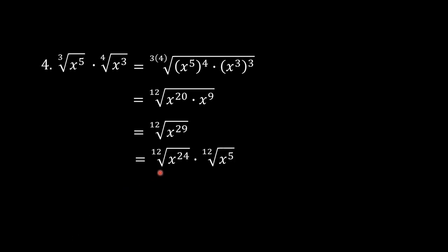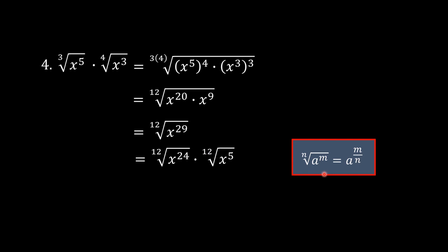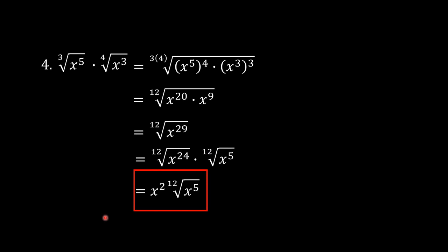This can be rewritten as the 12th root of x to the 24th times the 12th root of x to the 5th — since 24 plus 5 is 29. We do this so we can divide 24 by 12. Using the rule that the n-th root of a to the m equals a to the (m divided by n), we divide 24 by 12 to get 2. So this equals x squared times the 12th root of x to the 5th. That is the final answer.